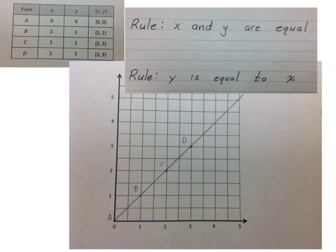I can even see that there would be some mixed numbers on this line. For instance, if I go over 2 and 1 half and up 2 and 1 half, that also falls on this line. Even though my coordinate plane doesn't go that far, if I went over 10 and up 10, I know that would also be on the line because I know that x and y are equal.